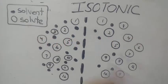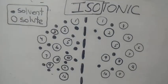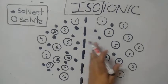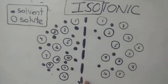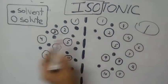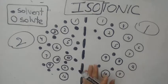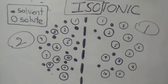Isotonic solutions — 'iso' means same — so two solutions having the same solute concentrations are isotonic solutions compared to each other. For example, on both sides of this membrane we have equal or same concentration of solute particles, so solution one and solution two are isotonic solutions when compared to each other.